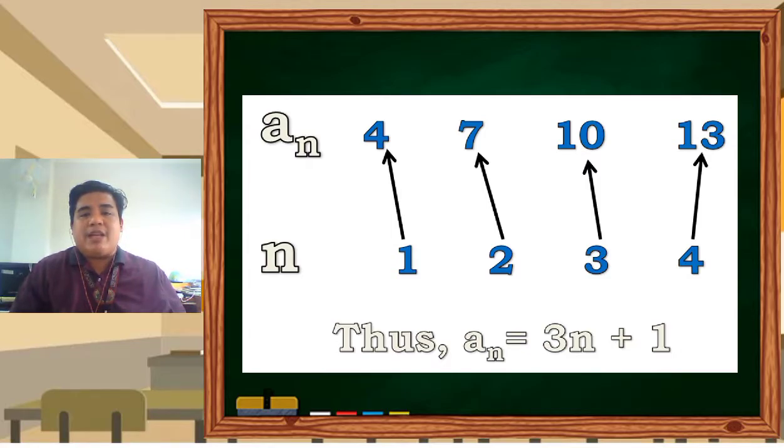3 times the n, or the position of the number, plus 1 is our rule. So 3 times 1 is 3 plus 1, that's how we got 4. 3 times 2 is 6 plus 1, that's how we got 7. 3 times 3 is 9, that's how we got 10. And 3 times 4 is 12, that's how we got 13.